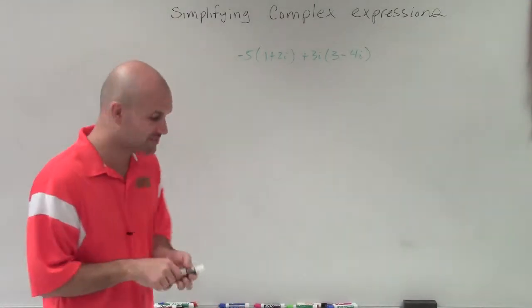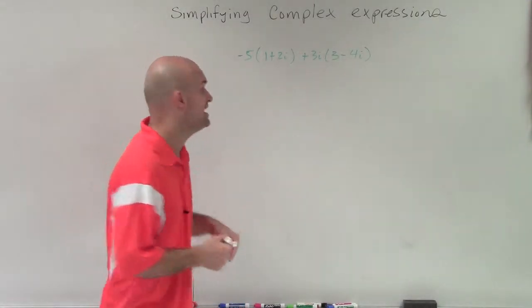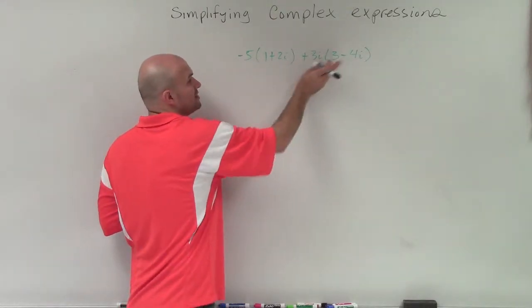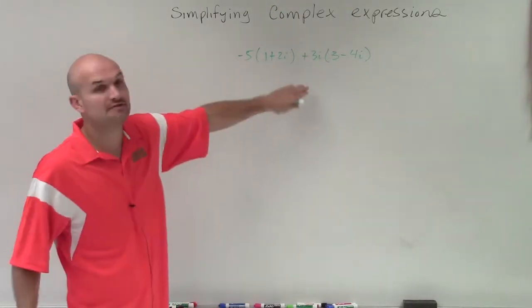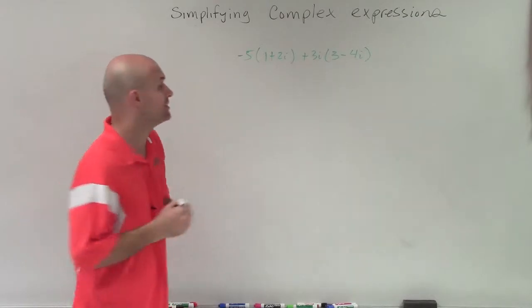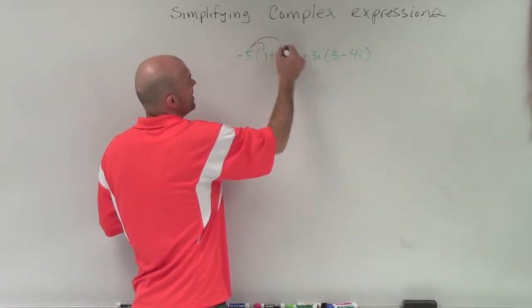So to simplify this, what we need to do is eliminate these parentheses. And to do that, we need to apply the multiplication of negative 5 and 3i to both of our binomials. And we're going to do that by applying distributive property.